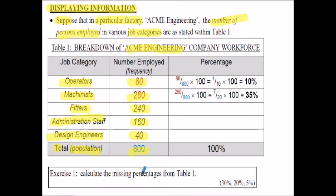If we want to present that in terms of percentages, which is a common way of presenting information, we simply take the number of people in these categories - so for operators 80 - divide it by the total people working at the company, the population of 800, and multiply by 100 to get percentages. Cancelling down, 80 upon 800 is 1 upon 10, so 1 upon 10 times 100 gives 10%. So 10% of the workforce are operators.